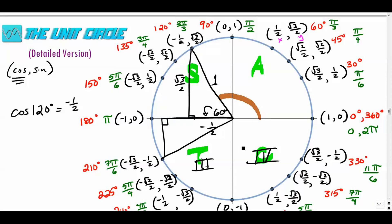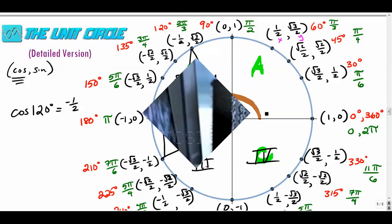Every reference triangle is either a 30-60-90 or a 45-45-90, created from the origin. Hopefully that helped. We'll tackle more trig topics over the next couple of videos — make sure you subscribe, and if you have any comments, ask below. Thanks for watching.